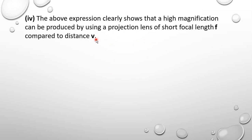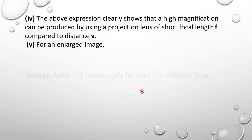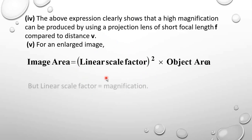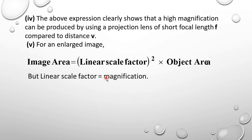Also, for an enlarged image, the image area is equal to the linear scale factor squared times the object area. The linear scale factor is actually the magnification, so image area = magnification² × object area.